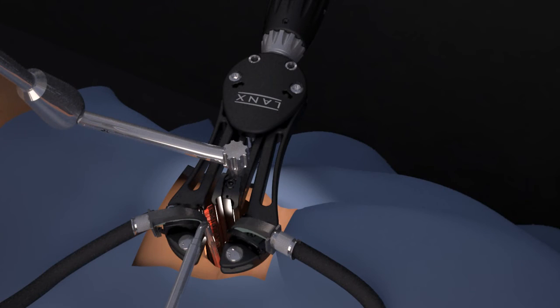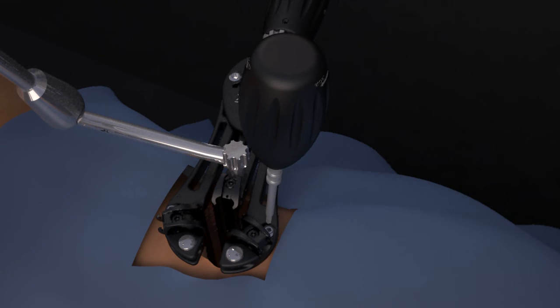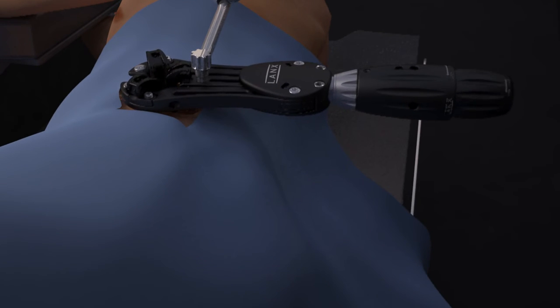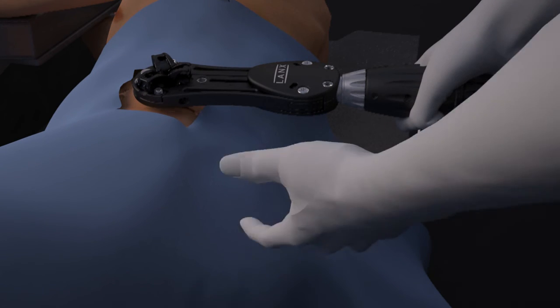Retract the posterior shim from the disc space. Return the retractor to the closed position. Disconnect the articulating arm from the retractor. Slowly remove the retractor from the wound while watching closely for excess bleeding or other abnormalities. Use standard closure techniques.